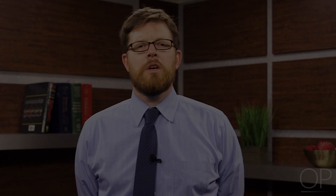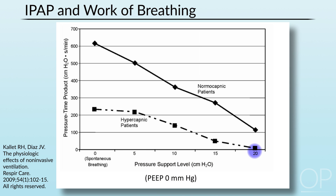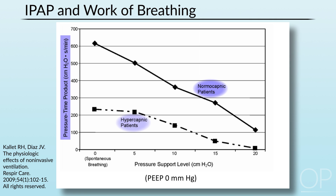Let's look at BiPAP specifically. BiPAP can be divided into IPAP and EPAP. Looking at IPAP — Inspiratory Positive Airway Pressure — and its influence on work of breathing: on the x-axis are different levels of pressure support with PEEP of 0, ranging from 5 to 20, with patients on the far right receiving 20 over 0 and on the far left spontaneously breathing. On the y-axis is the pressure time product, a measure of work of breathing. Both normocapnic and hypercapnic patients experienced drastic reductions in work of breathing in a dose-response relationship to the amount of IPAP used, and the effect was more dramatic in normocapnic patients.